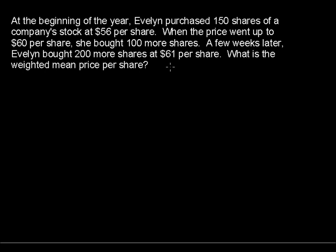At the beginning of the year, Evelyn purchased 150 shares of a company stock at $56 per share. When the price went up to $60 per share, she bought 100 more shares. A few weeks later, Evelyn bought 200 more shares at $61 per share. What is the weighted mean price per share? So this example talks about buying all these stocks at different prices and different amounts.